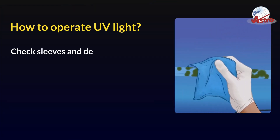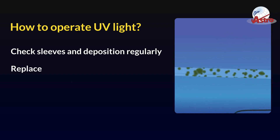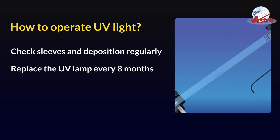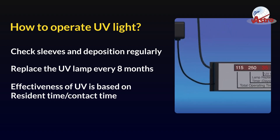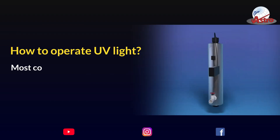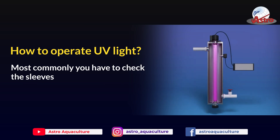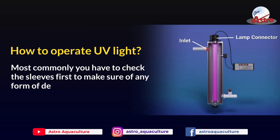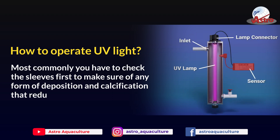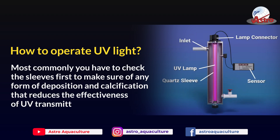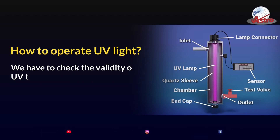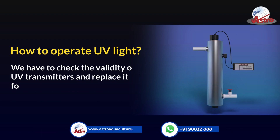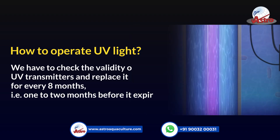How to operate UV light: Check sleeves and deposition regularly. Replace the UV lamp every 8 months. The effectiveness of UV is based on resident time and contact time. Check the sleeves first to make sure there is no deposition or calcification that reduces the effectiveness of UV transmittance. Replace UV transmitters every 8 months — that is, 1 to 2 months before it expires.